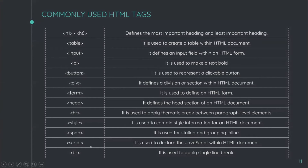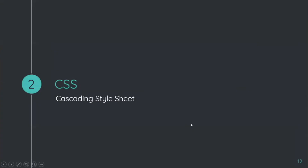The script tag is used to include JavaScript within an HTML document, and the br tag is used to insert a line break. That covers the basics of HTML — all of these are covered in detail in the Bolt IoT web development training.